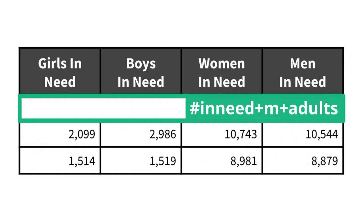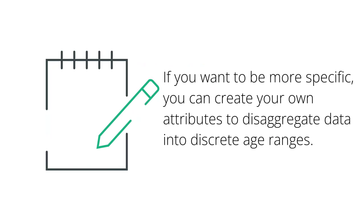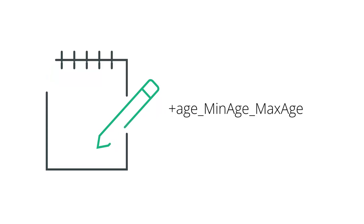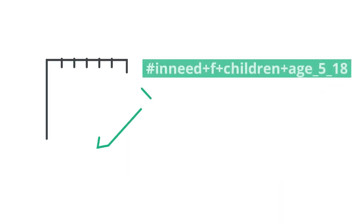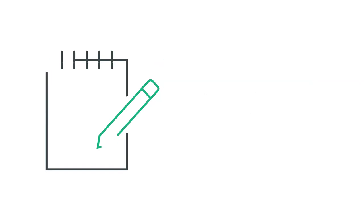And #inneed+M+adults for the number of men. If you want to be more specific, you can create your own attributes to disaggregate data into discrete age ranges. The convention is to use +age_[minimum age]_[maximum age]. For example, for girls aged 5 to 18 in need of humanitarian assistance, we would use #inneed+F+children+age_5_18.